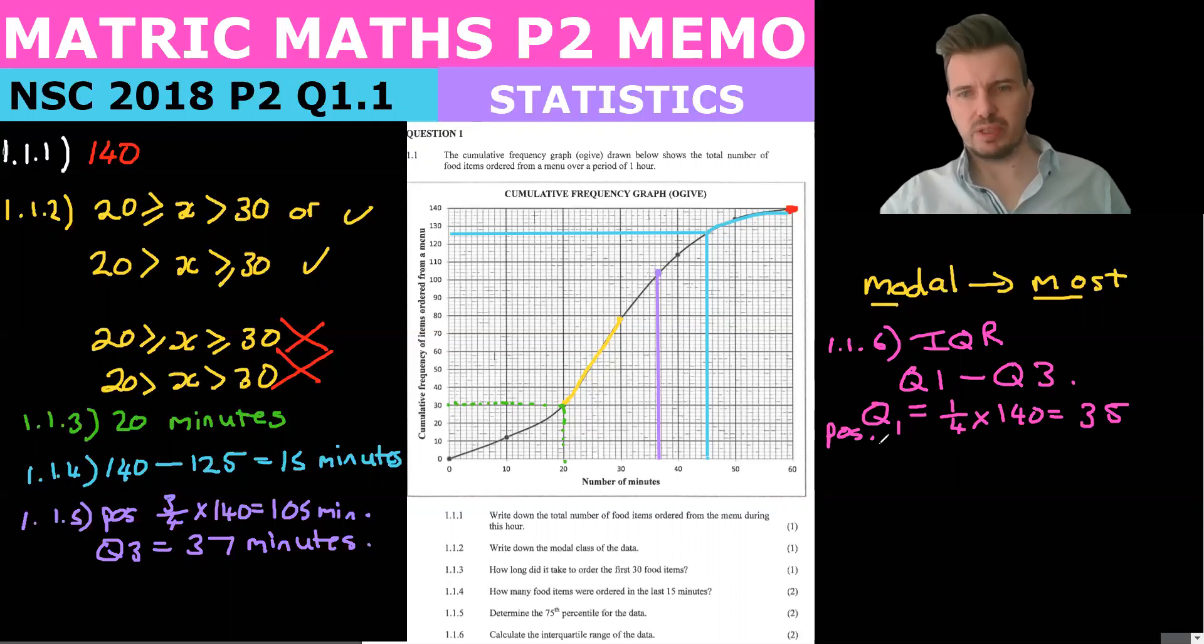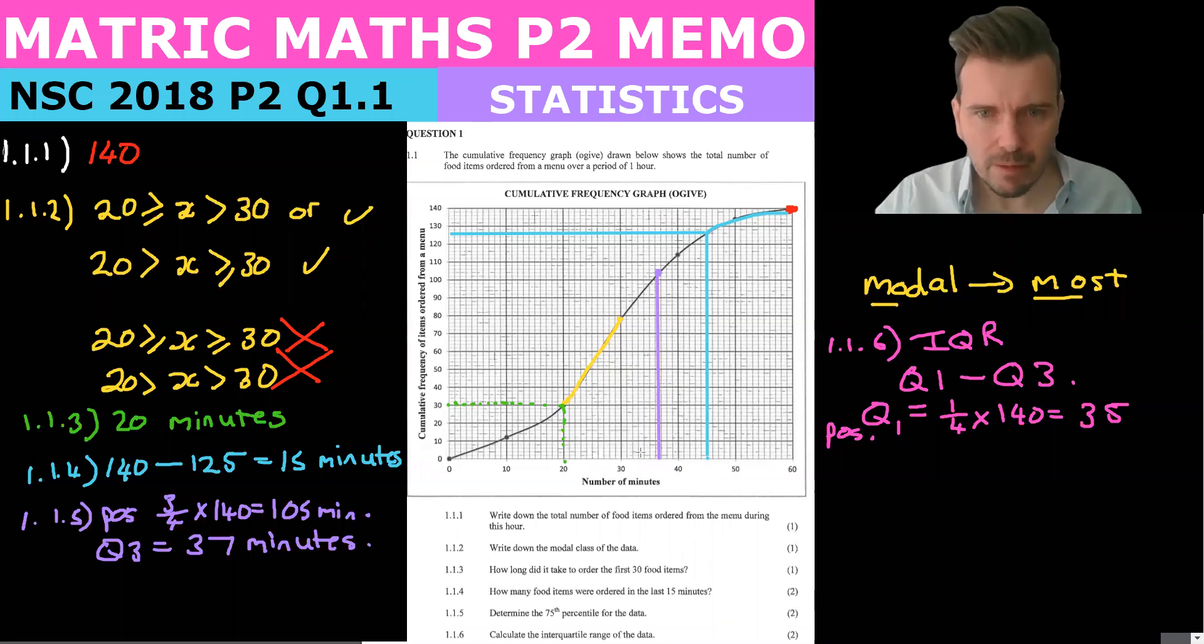Don't get confused - the Q1 is not 35, that's the position of Q1. Now we have to look at 35 over here at the cumulative frequency and read it off the graph. And we see that it's roughly about 22. So we know Q1 is equal to 22 minutes.